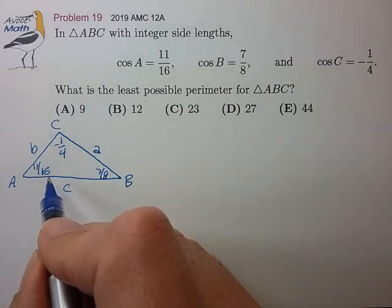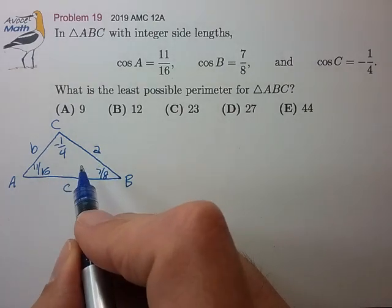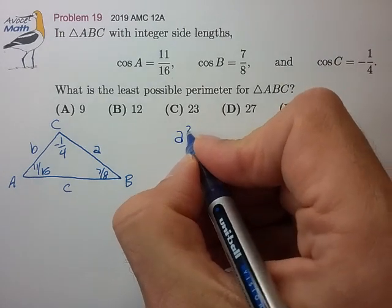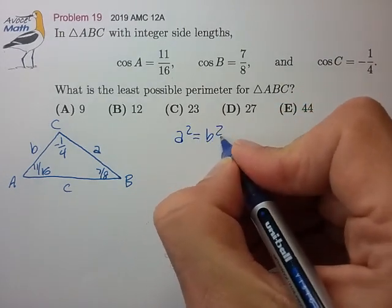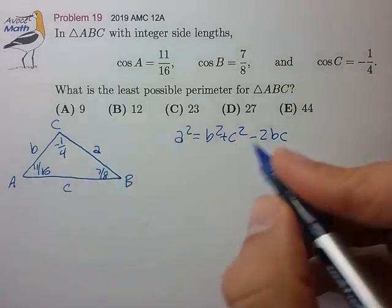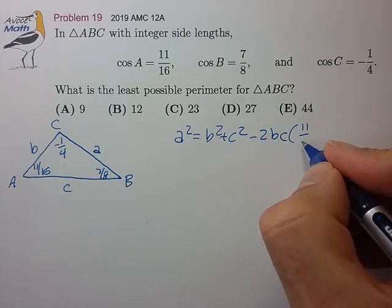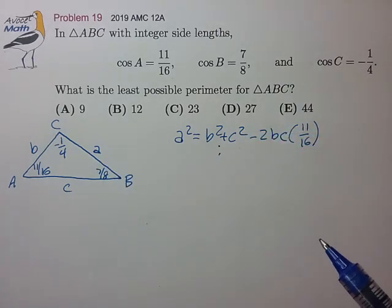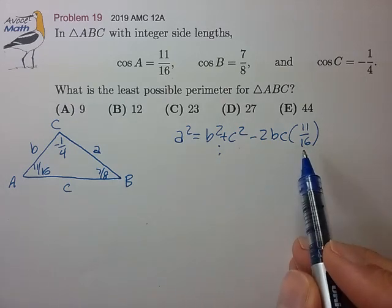Okay, we have all the information to plug into the law of cosines, so let's just take a look at what that is. a² = b² + c² - 2bc cos(11/16). Times the cosine of A, and we'll have three more for the other two sides.